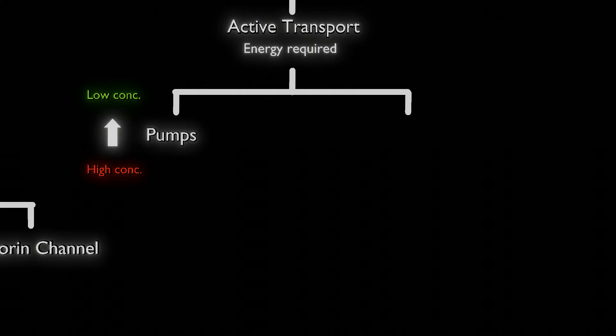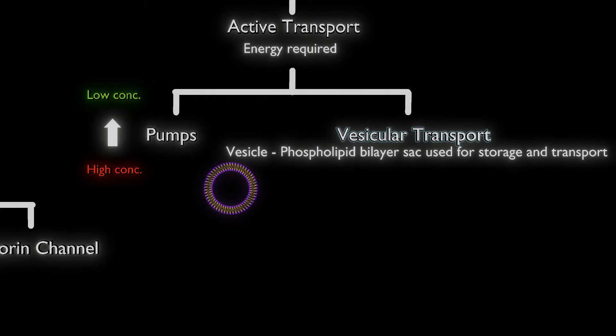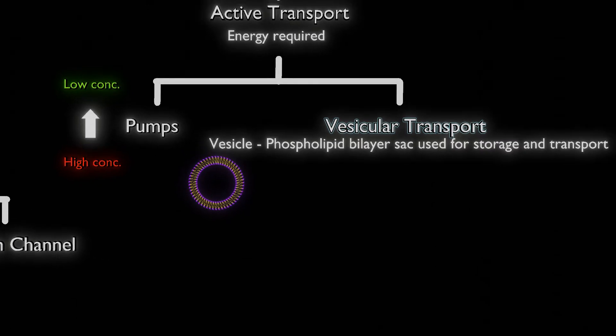Today we're going through vesicular transport, which is the other facet of active transport. Vesicular transport uses a vesicle, which is a phospholipid bilayer sac used for storage and transport.